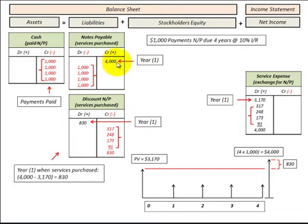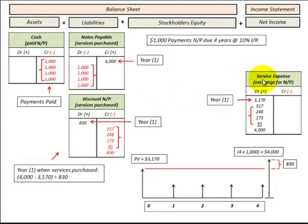Here I'm going to demonstrate how to record a notes payable. This notes payable is going to have four equal payments at the end of each of the next four years. There will be a discount to the notes payable and the associated expense. We'll have to determine the present value, the notes payable, and then the interest expense that gets charged to each one of those four payments.